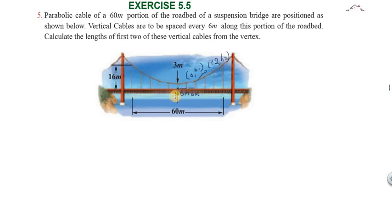Now we need to identify the known points. The endpoint is at 30 meters from the center with a height of 16 meters, so the point is 30 comma 16. This is an open upward parabola, so the equation is x square equal to 4ay.